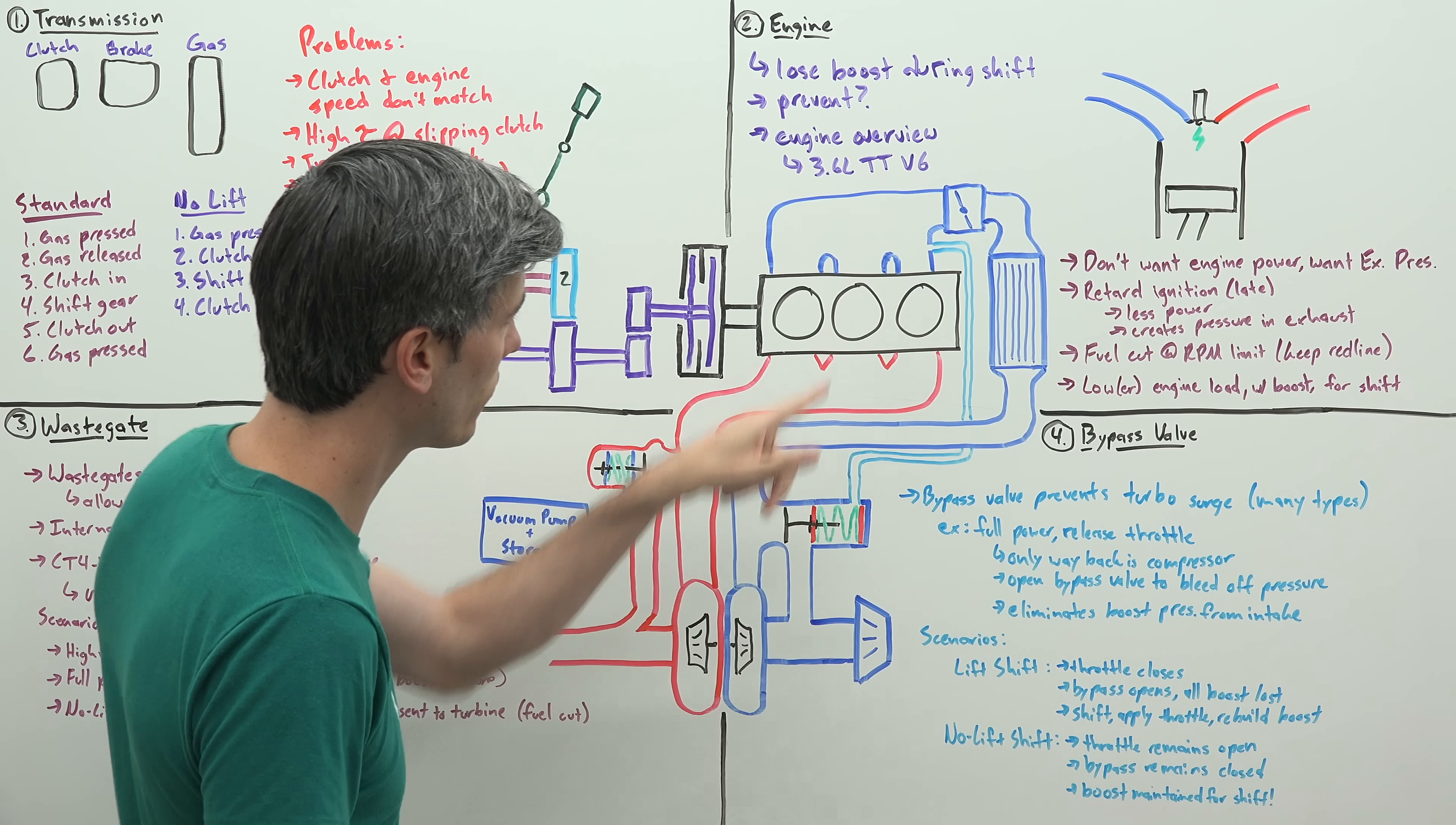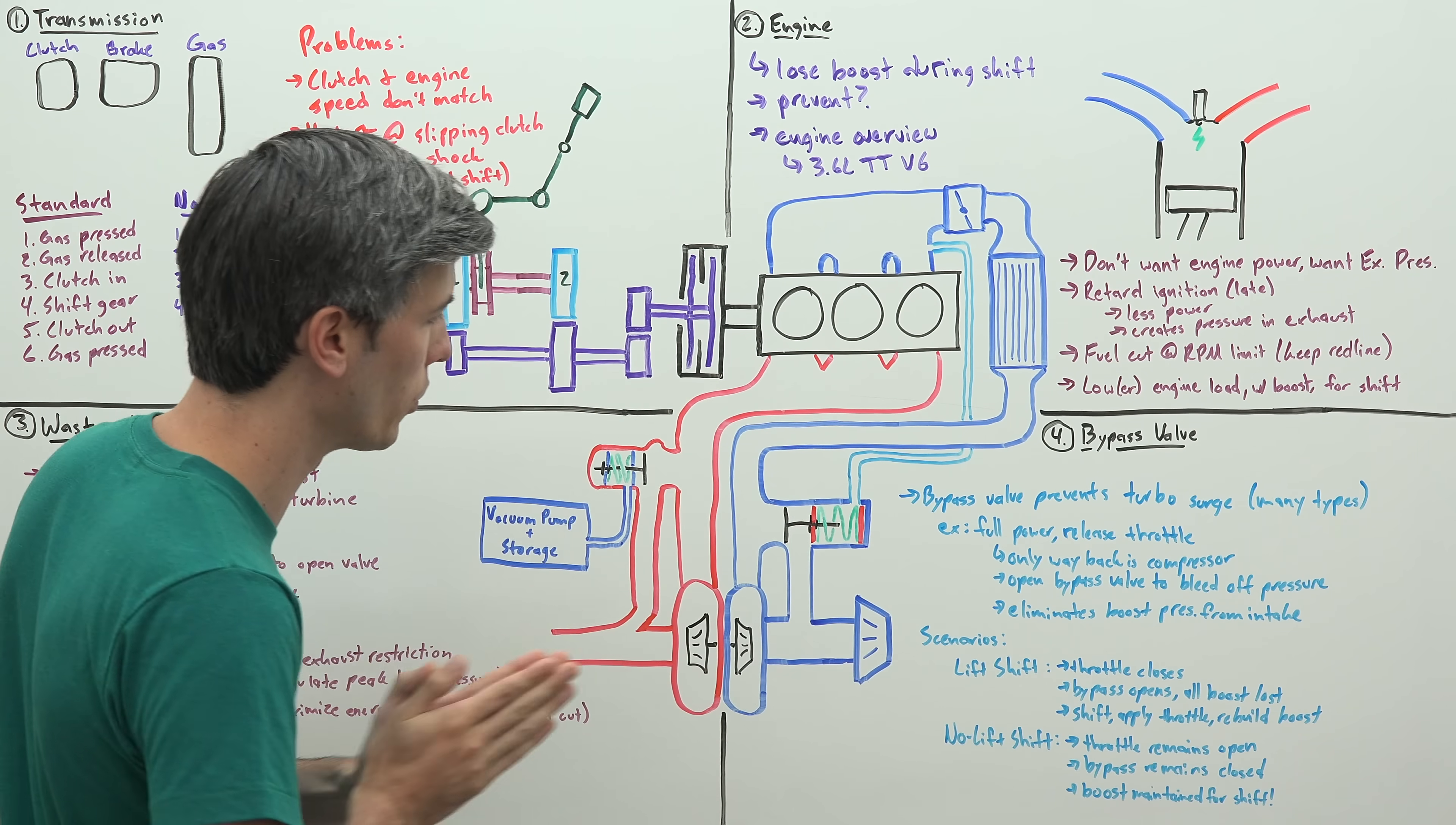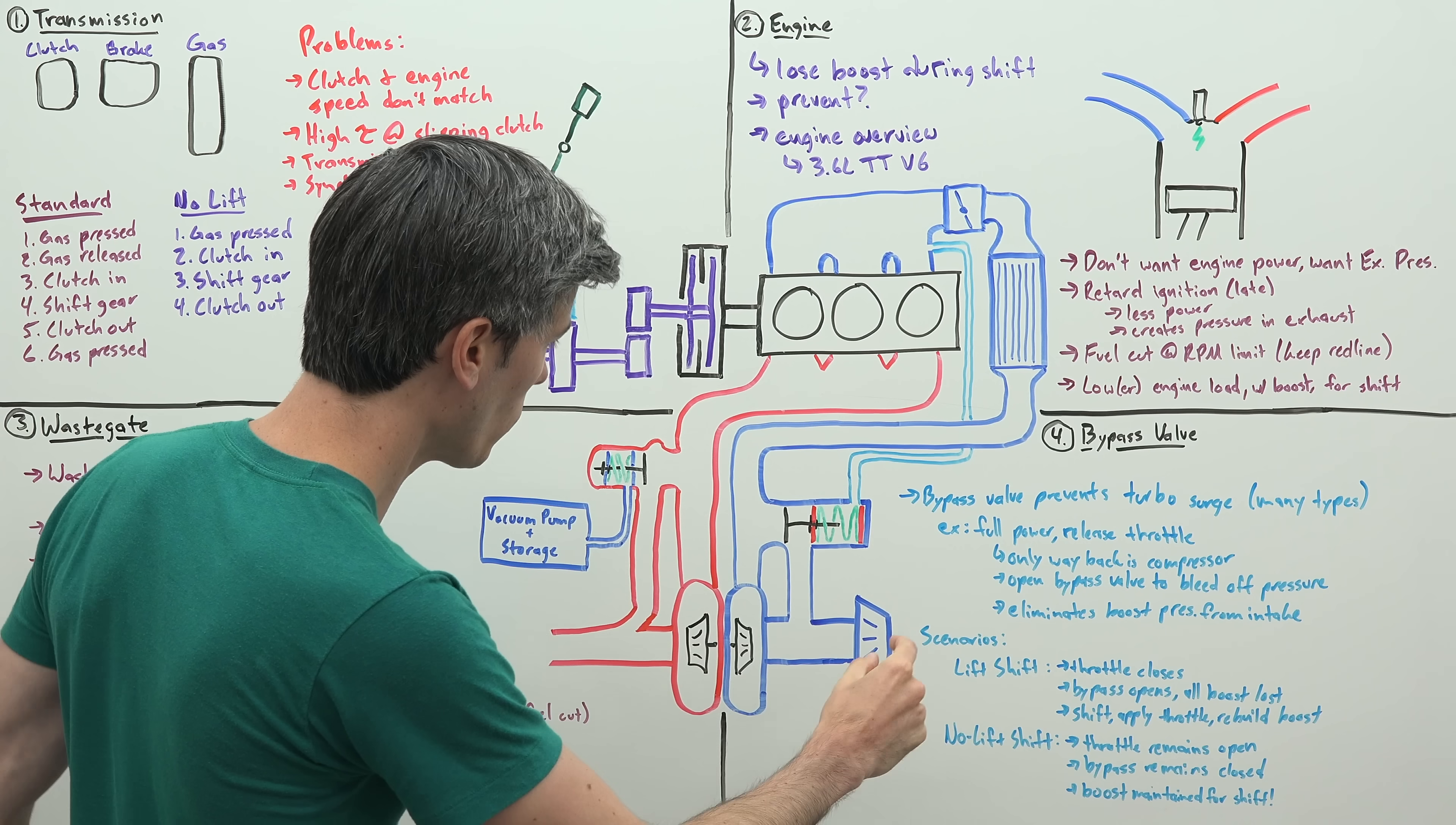Well, you have a valve that sees, okay, there's a vacuum here, it opens this up, it allows that high pressure air to escape. But basically what you're doing is you're bleeding off all of that boost. So in the scenario that you're lifting while you shift, so you press in the clutch, and while you're pressing in the clutch, you let off the throttle.